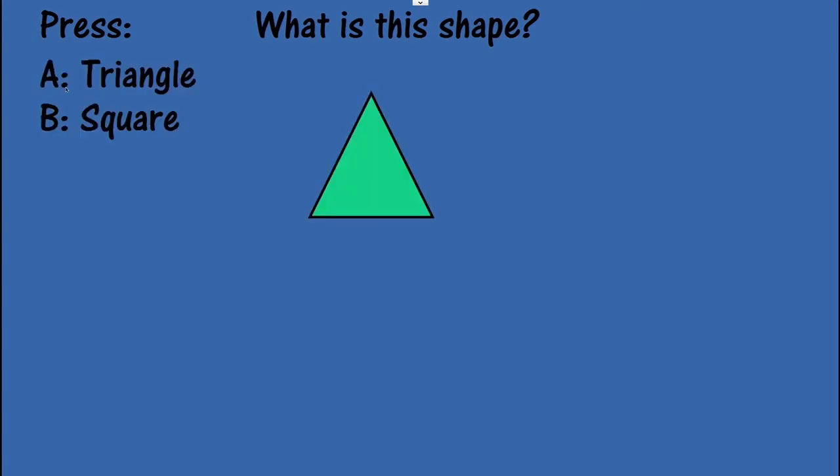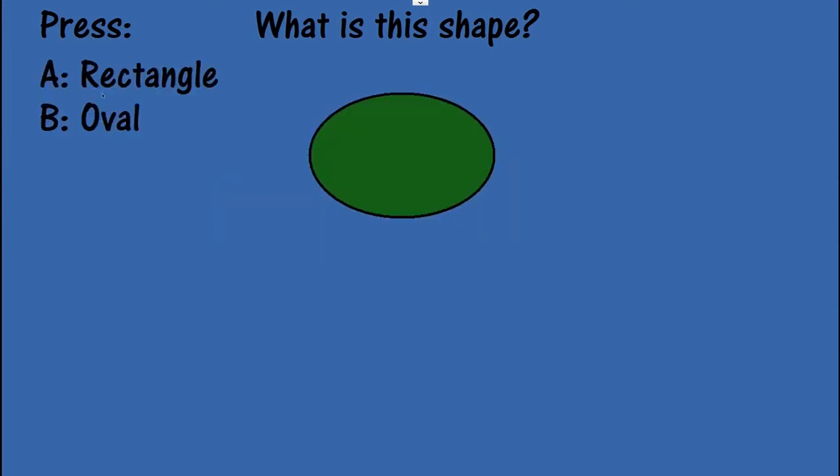Triangle. A. You have the sound. B, an oval. And A, a rectangle.